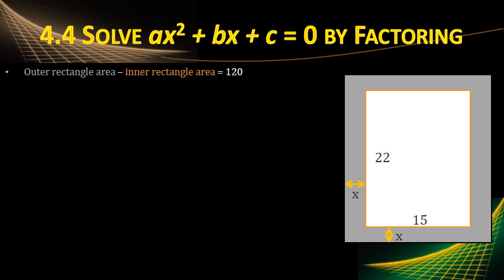So our border would be the outer area, the outside rectangle minus the inside rectangle. And that should give us the area of the gray border that will be covered with stone, which we said was 120 square feet. So the outer rectangle area, length times width, is 2x, and it's 2x's because there's an x here and an x here, plus the 22. And the width is 2x's, one there, one here, plus the 15. Minus the middle rectangle area, which is just length times width, or 22 times 15.